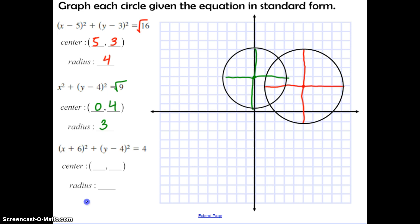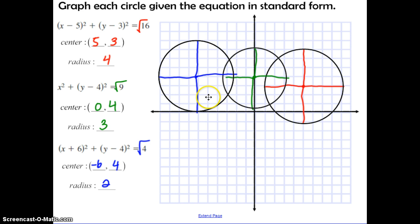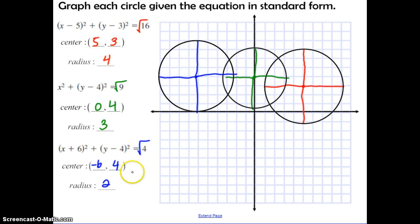Go ahead and try the next one and check back to see if you got it right. Hopefully your graph looks like the blue circle drawn here. If you didn't have graph paper, make sure you at least have that the center coordinates are negative 6, 4 and the radius is 2.